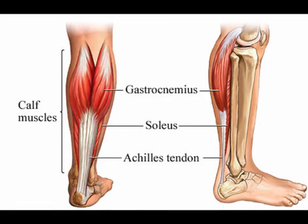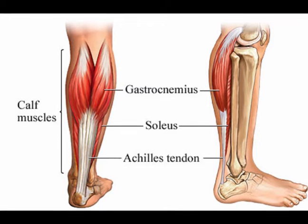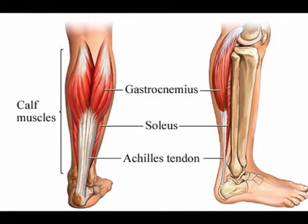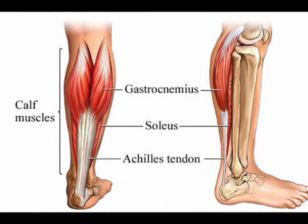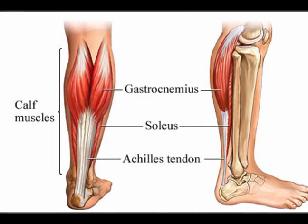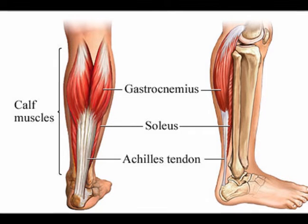Spinal nerve roots S1 and S2 innervate the gastrocnemius muscle and the soleus muscle; when these two muscles are contracted concentrically, they perform plantar flexion. The myotome for spinal nerve root S2 innervates the hamstrings, which when contracted concentrically perform hip extension and knee flexion. So again, a myotome is a muscle or muscle group that a single spinal nerve root innervates.